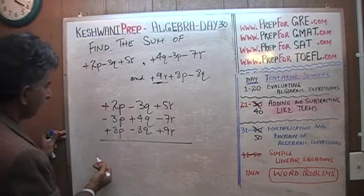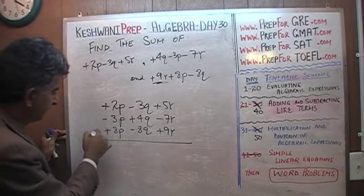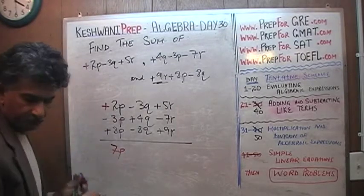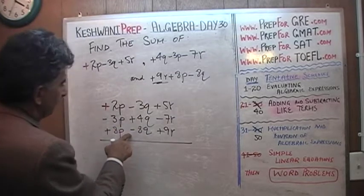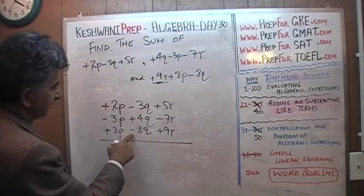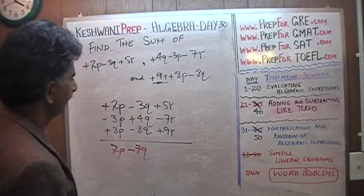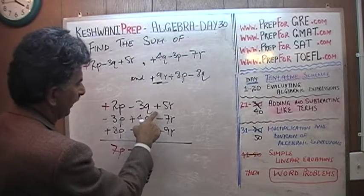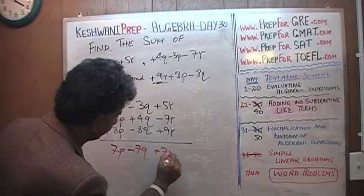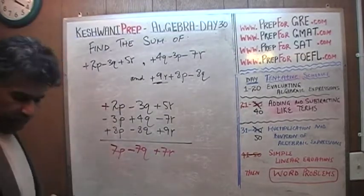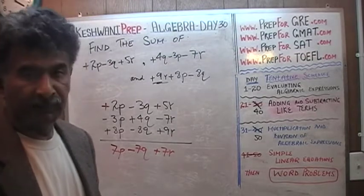Now everything is lined up, we can add them up. For p: positive 2 and positive 8 is 10, minus 3 is positive 7 — so 7p. For q: negative 8, negative 3, and positive 4 gives negative 7 — so negative 7q. For r: positive 5 and negative 7 is negative 2, and positive 9 is positive 7 — so positive 7r. The answer is 7p minus 7q plus 7r.